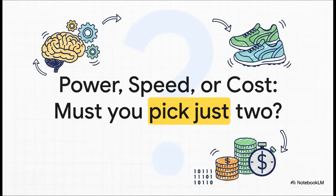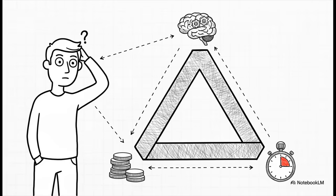If you've ever tried to build anything with AI, you've faced this dilemma. It's the classic trade-off: you want power, you want speed, and you want it to be affordable. But for so long, the rule has been you can only pick two. Getting all three? That's felt like a pipe dream. It's so common that people in the field actually call it the impossible triangle of AI development.